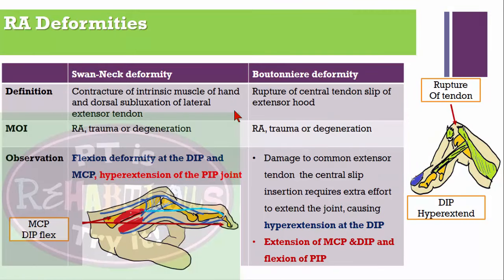Now let's learn deformities. Swan neck deformity: there is contracture of the intrinsic muscles of the hand and dorsal subluxation of the lateral extensor tendon. Mechanism includes rheumatoid arthritis, trauma, or degeneration. On observation: flexion of the metacarpophalangeal joint, flexion of the distal interphalangeal joint, and hyperextension of the proximal interphalangeal joint.